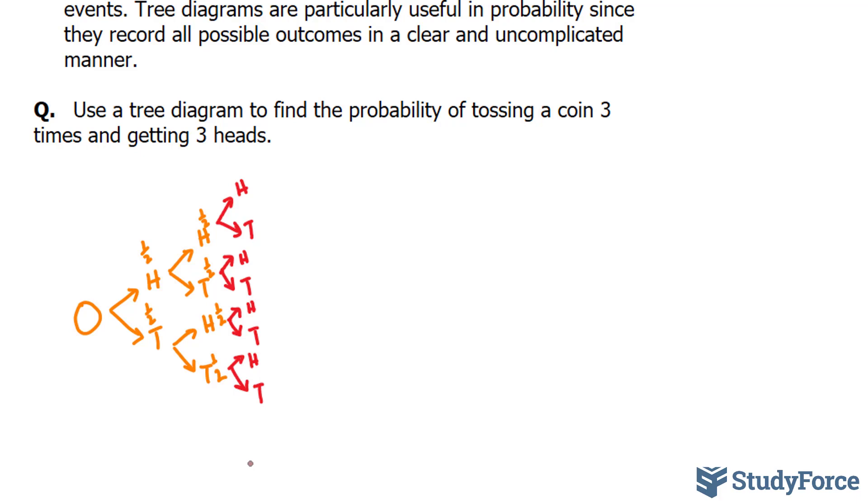So the question is asking, find the probability of tossing a coin three times and getting three heads. So tossing it once, there's half a chance of getting heads. And then tossing it again, there's another half a chance. And then tossing it again and getting heads is another half chance. So what you do is you take your half and multiply it to the other one. So this times this times this, and you end up with a 1 in 8 chance of tossing heads three times in a row.